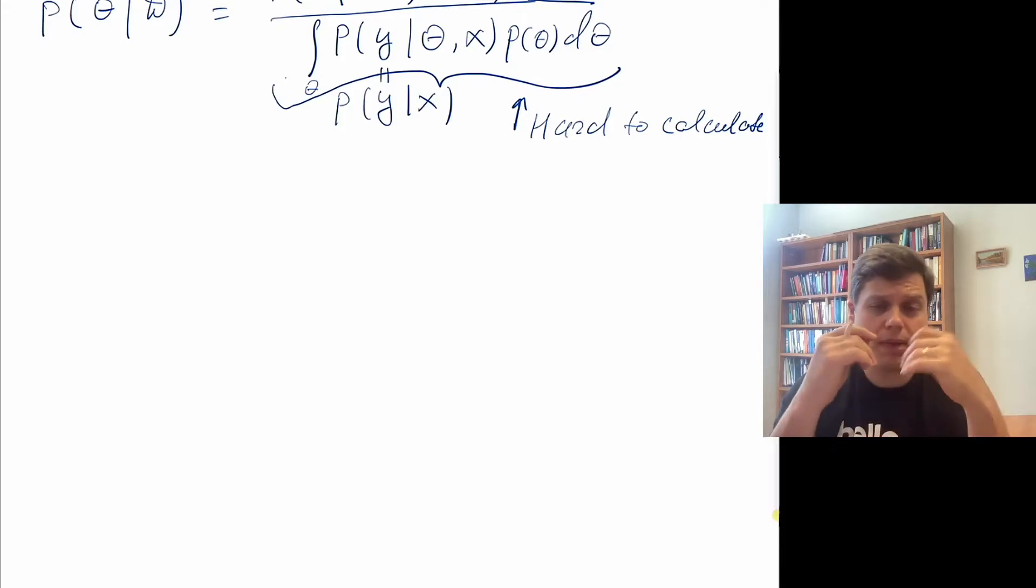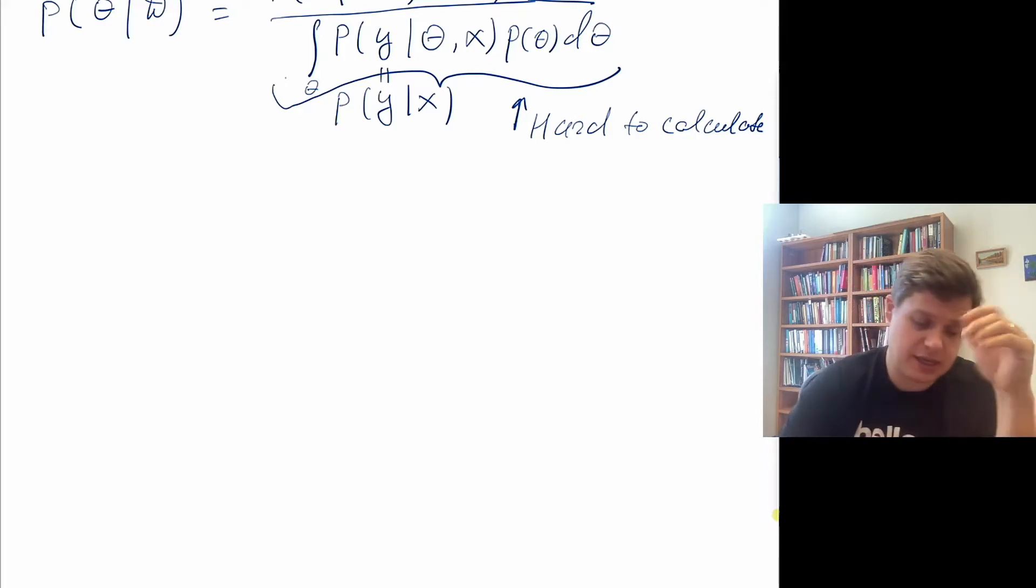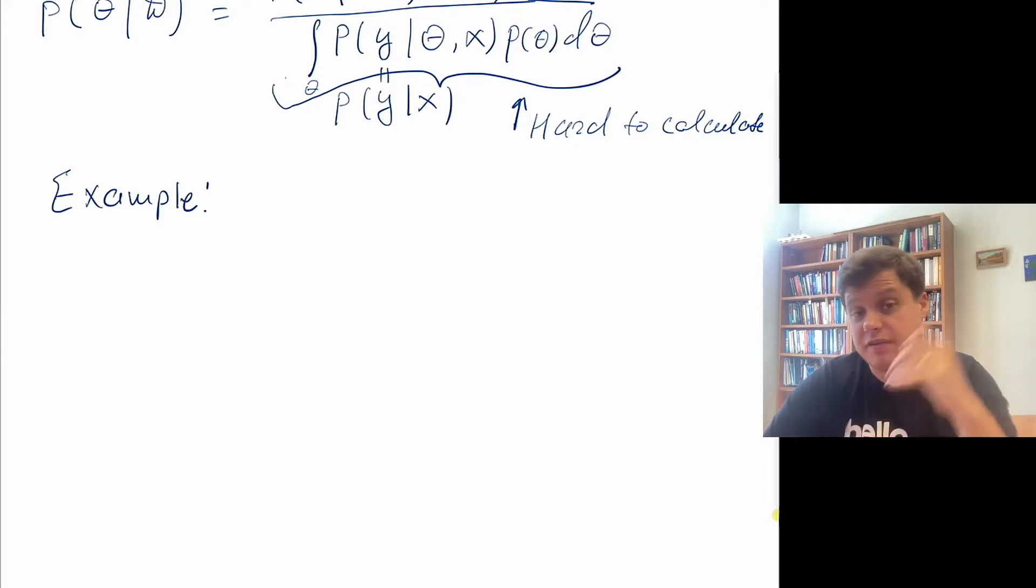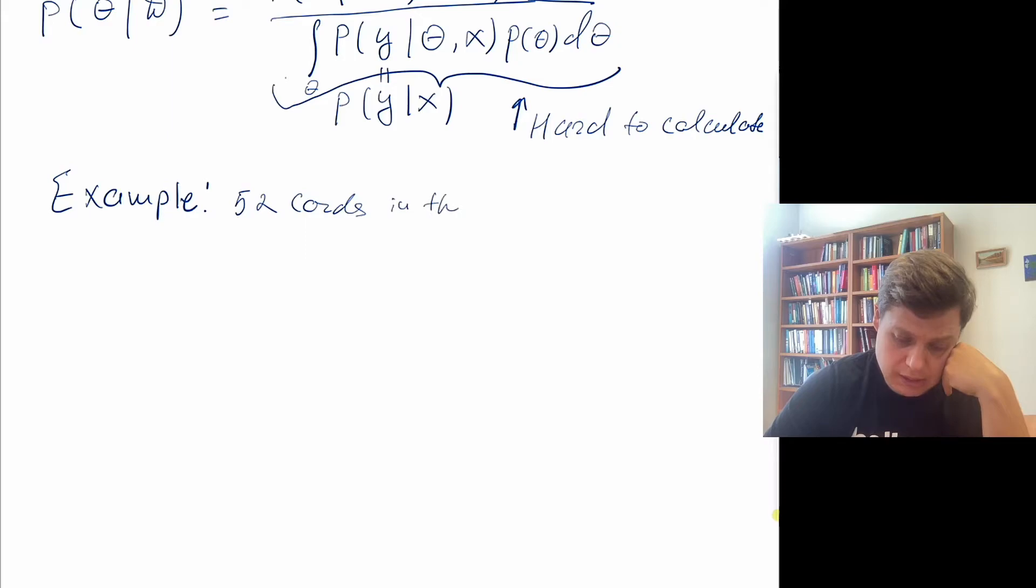And we're going to motivate MCMC by looking at the problem of shuffling cards, a deck of cards. So let's say you have, we're going to do a quick example. So let's say you have a deck of cards and there are 52 cards in the deck.